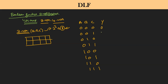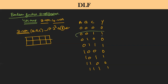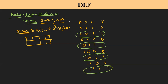Suppose output Y contains: 0, 1, 0, 1, 0, 1, 0, 1. You are going to consider only the 1s. The decimal values are 0, 1, 2, 3, 4, 5, 6, 7. So what are all the positions having value 1? Position 1 is having 1, position 3 is having 1, position 5 is having 1, position 7 is having 1.